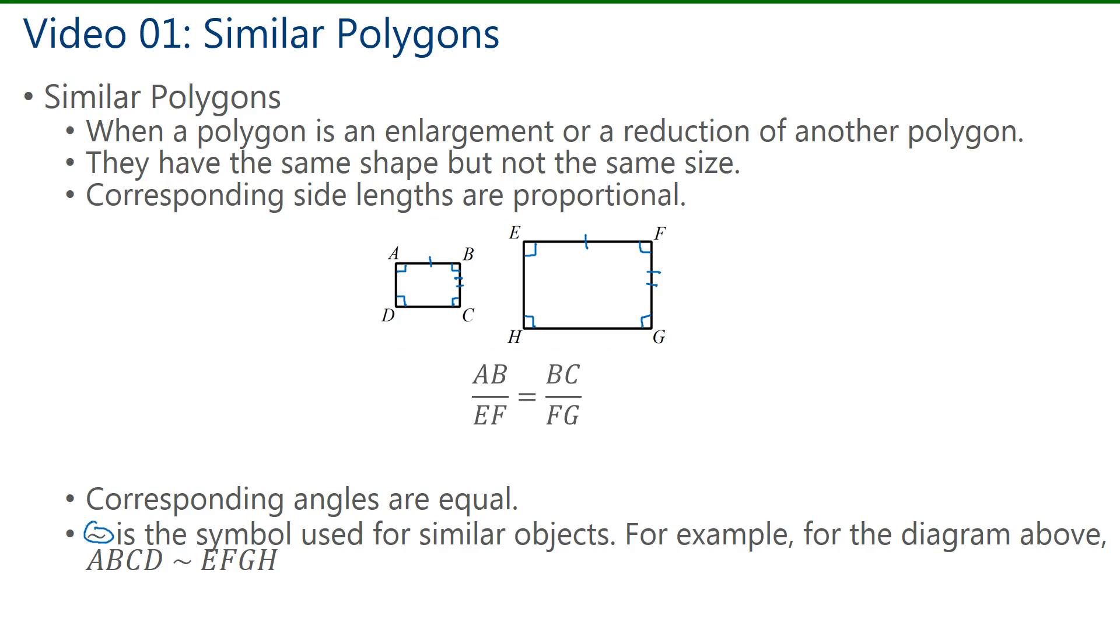Now the squiggly line, called the tilde, is the symbol that we use for similar objects. So in the case of the similar polygons above, we can say that ABCD is similar to EFGH. And the order that you write the vertices is important. Here, AB is going to be proportional to EF, BC is going to be proportional to FG, CD is proportional to GH, and AD is proportional to EH.